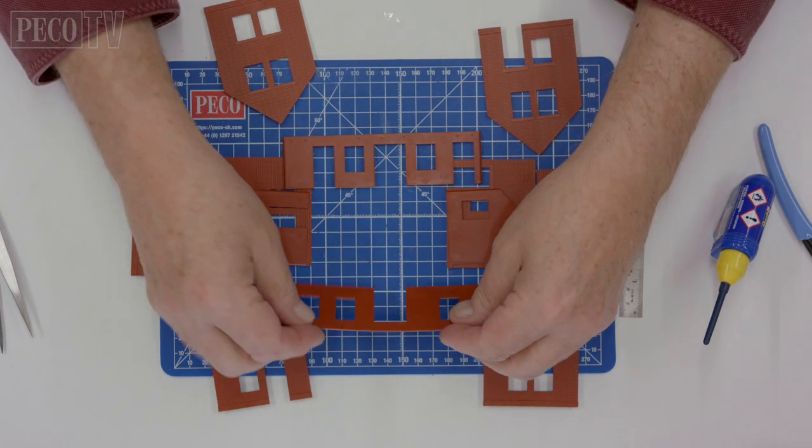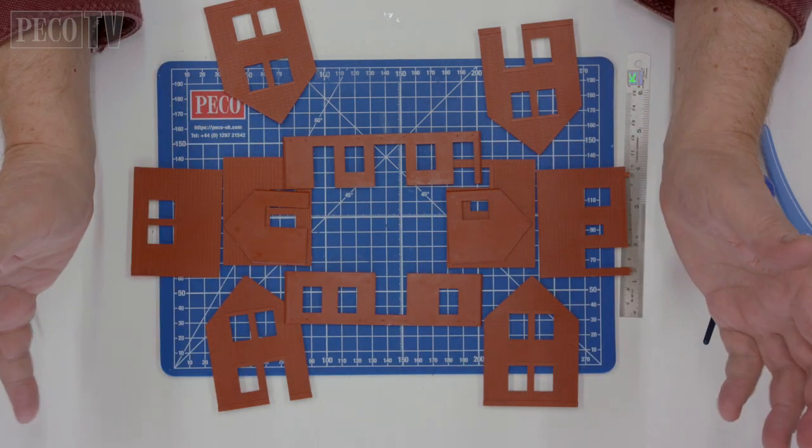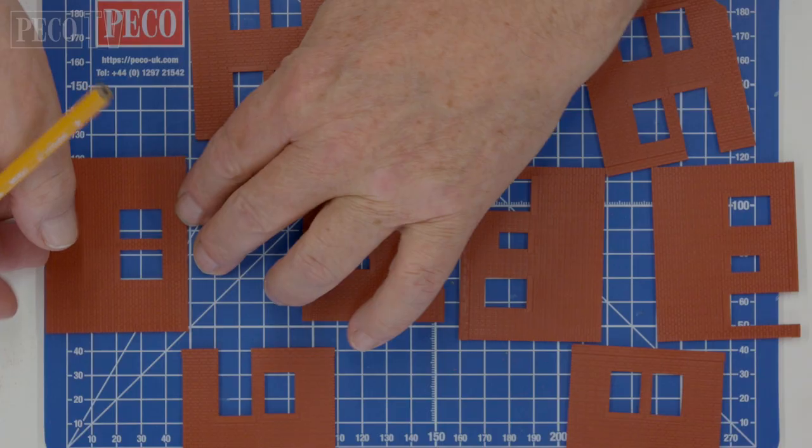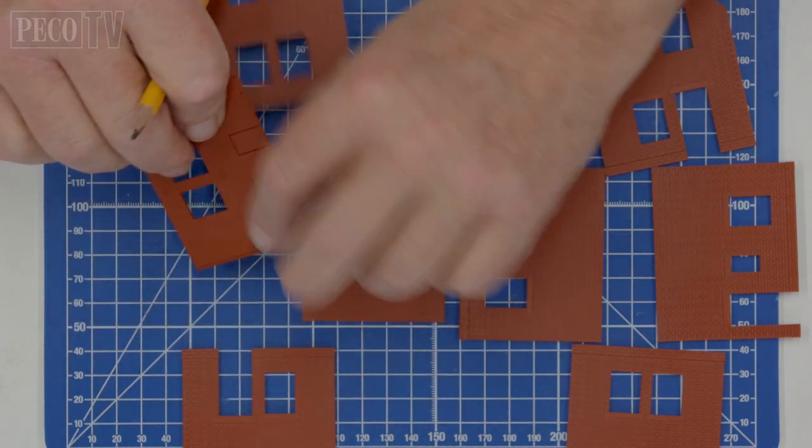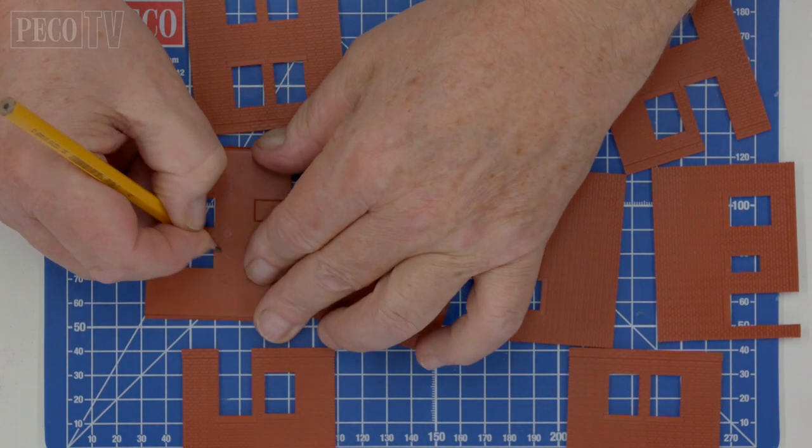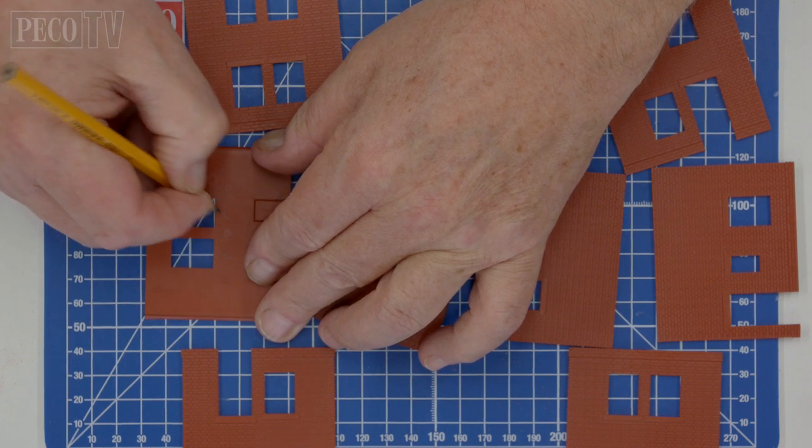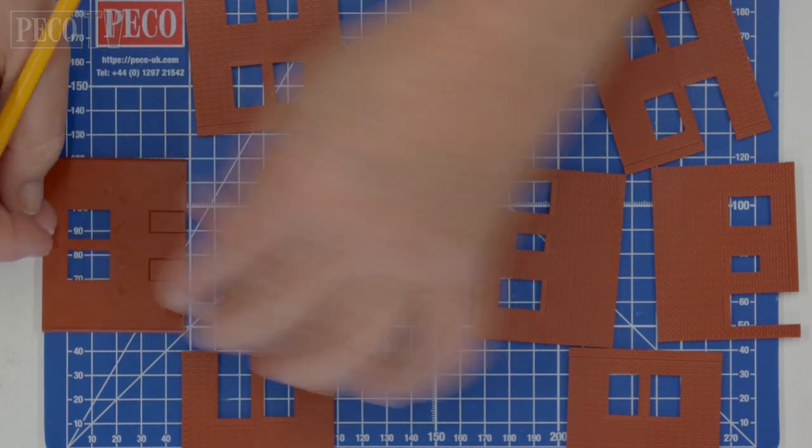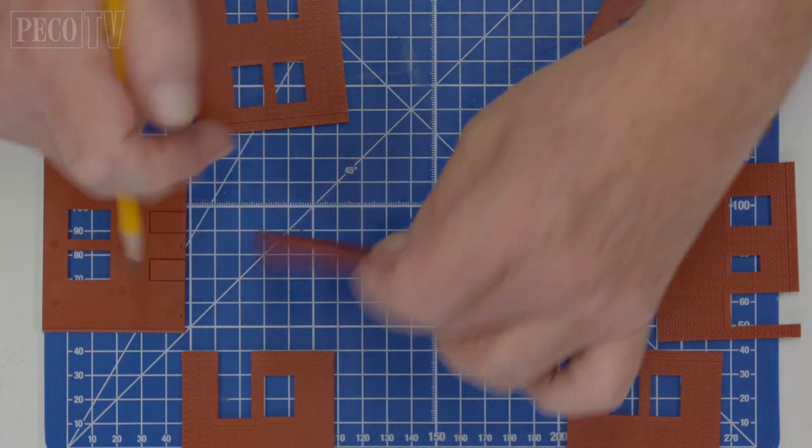Because we are combining kits together some of the doors and windows will not be required. I would recommend using a pencil to mark out the windows and doors that are no longer required as fitting the windows and the doors may cause the walls not to come together as desired.